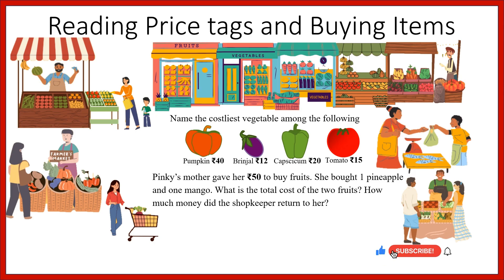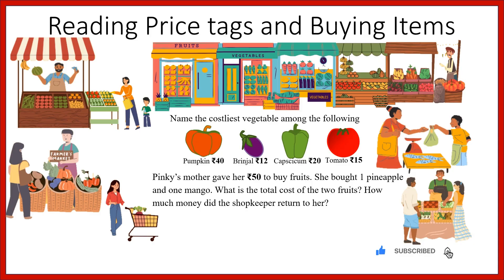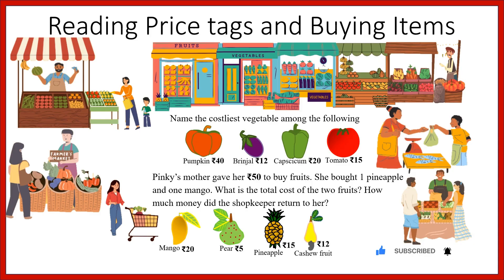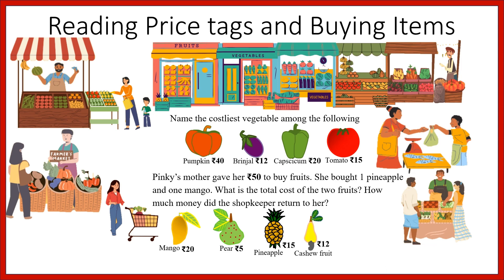Next, Pinky's mother gave her rupees 50 to buy fruits. She bought one pineapple and one mango. What is the total cost of the two fruits and how much money did the shopkeeper return to her? The fruits and their prices: mango 20 rupees, pear 5 rupees, pineapple 15 rupees, and cashew fruit 12 rupees. She is buying one pineapple and one mango: 15 plus 20 equals 35. She gives 50 rupees to the shopkeeper, so he returns 50 minus 35, which is equal to 15 rupees.